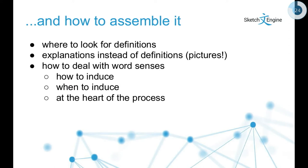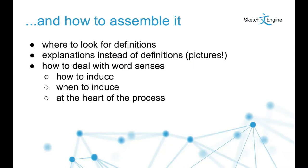There are lots of tiny questions that pop up throughout the whole pipeline of the one-click dictionary. Most of them are obvious: where to look for the definitions, when to use explanations instead of definitions, for instance pictures obtained automatically from things like the Google Images API, how to deal with word senses, how to induce them, when to induce them. The word senses are really at the heart of the process.